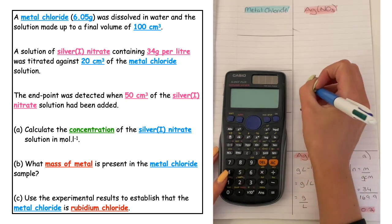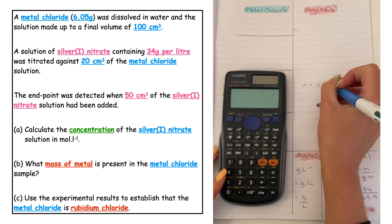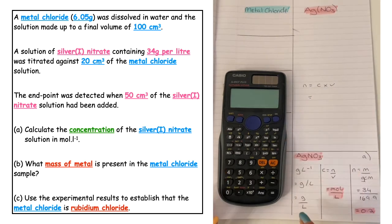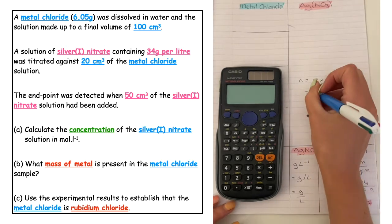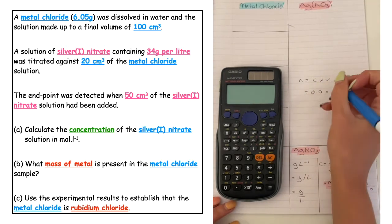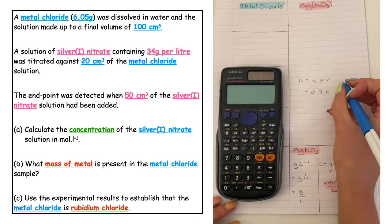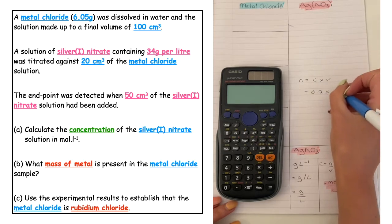Number of moles is equal to c times v. The concentration we were given in the question from the previous part was 0.2, times by the titre value given in the question which was 50 centimetres cubed, and we divide that by a thousand.